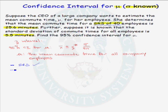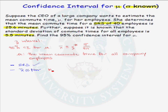The other condition we must have is that x-bar is either normal or approximately normal. Our sample size is 40, which is greater than 30, so by the central limit theorem, x-bar is approximately normally distributed.